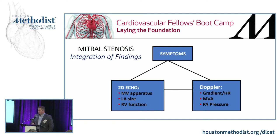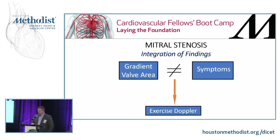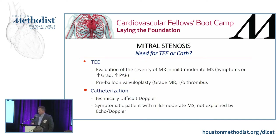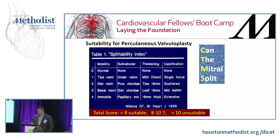If we have symptoms with mitral stenosis, we do an echo. If the echo doesn't correlate — if we have severe symptoms but an insignificant gradient or a calculated low valve area — we do an exercise Doppler to see if we can elicit a proper gradient under normal flow conditions. Should you have to do a TEE to evaluate initially for mitral stenosis? Usually not — only if you're going to do a pre-balloon valvuloplasty or grade the amount of mitral regurgitation. You almost never have to do a catheterization anymore.